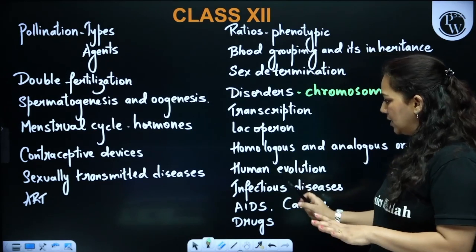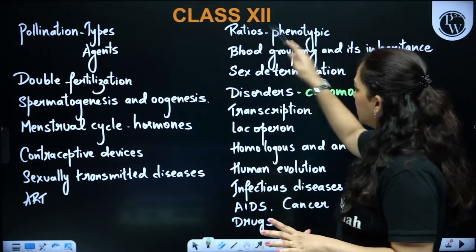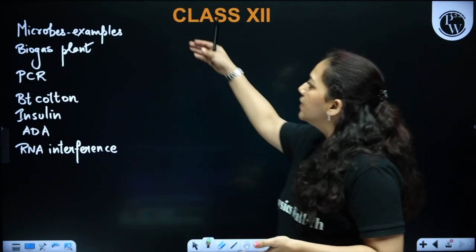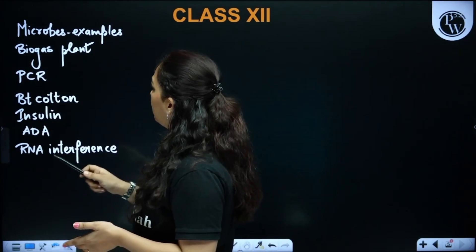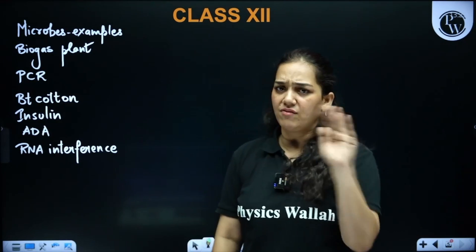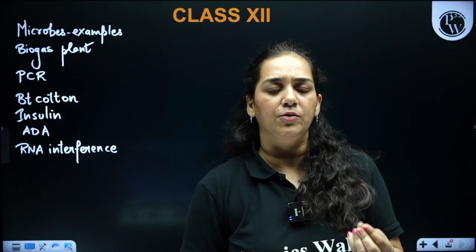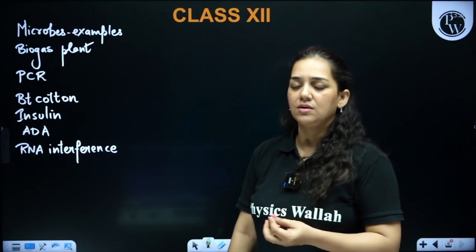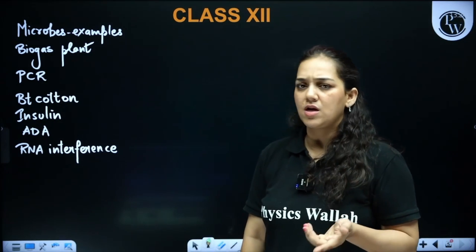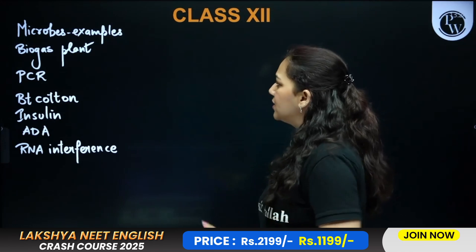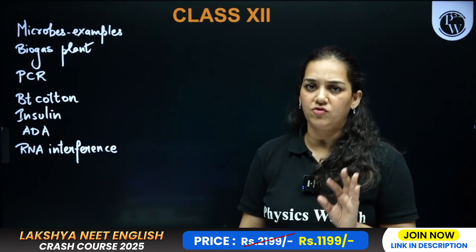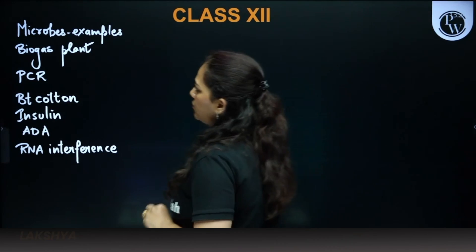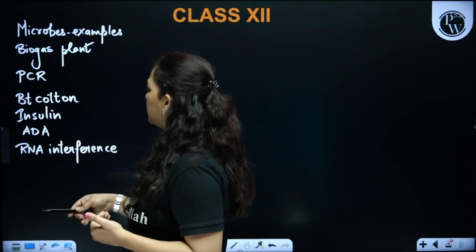In Microbes in Human Welfare, examples for everything are important — antibiotic production, chemical production, enzyme production, microbes in household products, and biogas plants. Questions are asked from all of these areas within the microbes chapter.